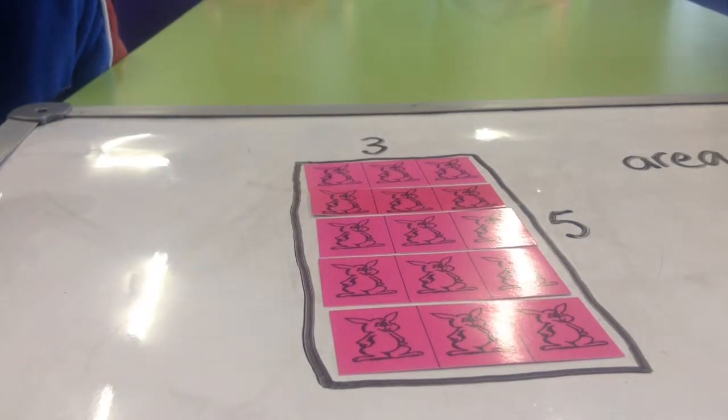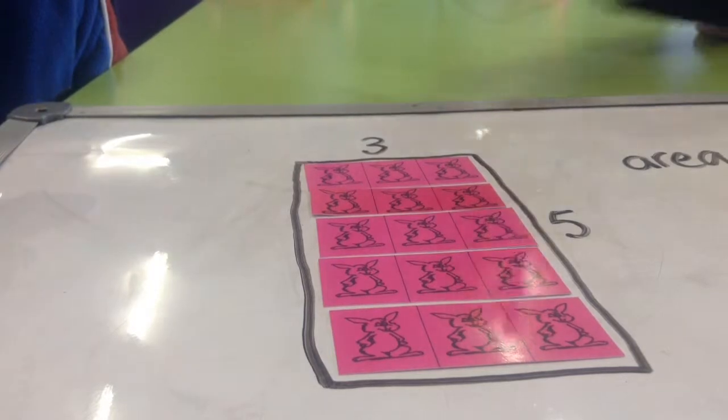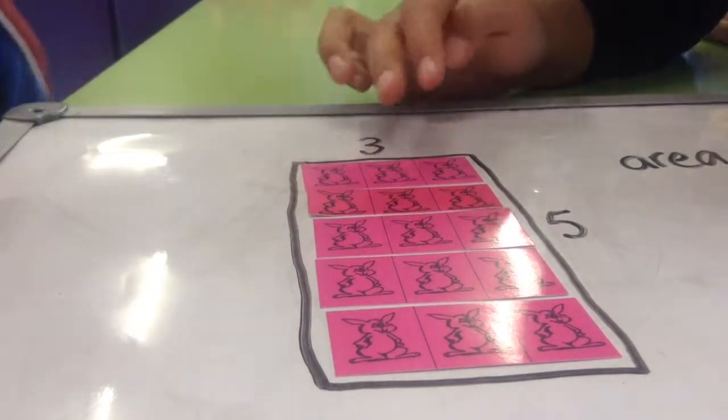Yep. Can you see a faster way of counting them? Susanna? How would you do that? Show us. Two, four, six, eight. No, shh. Touch them and show us.